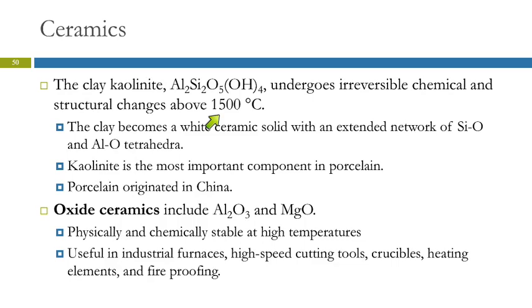When you heat kaolinite above 1500 degrees Celsius, it undergoes irreversible chemical and structural changes to give you a white ceramic solid with a network of silicon-oxygen and aluminum-oxygen tetrahedra.